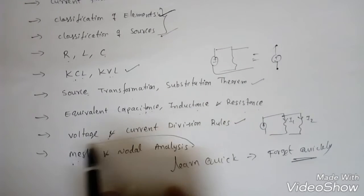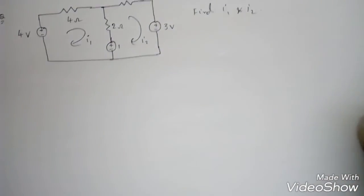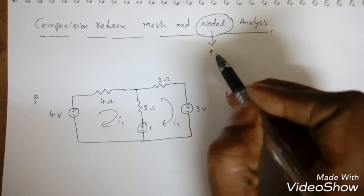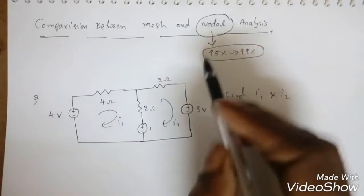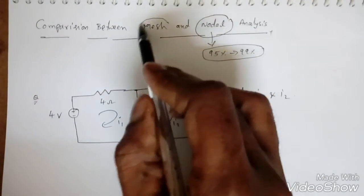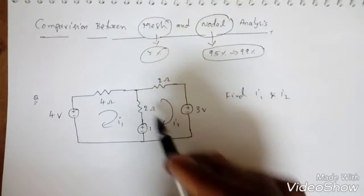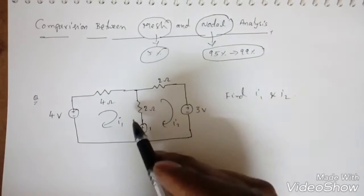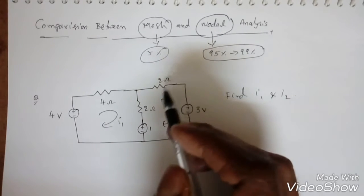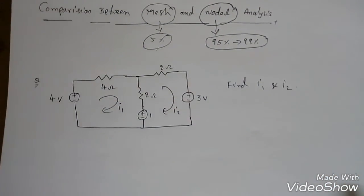We've completed mesh and nodal analysis. When comparing the two: 95 to 99 percent of all circuits can be solved using nodal analysis because it gives fewer equations. Mesh analysis gives more equations. Only about 5 percent of cases — for example, where super node concepts are needed — require mesh analysis. So maximum problems can be solved using nodal analysis.